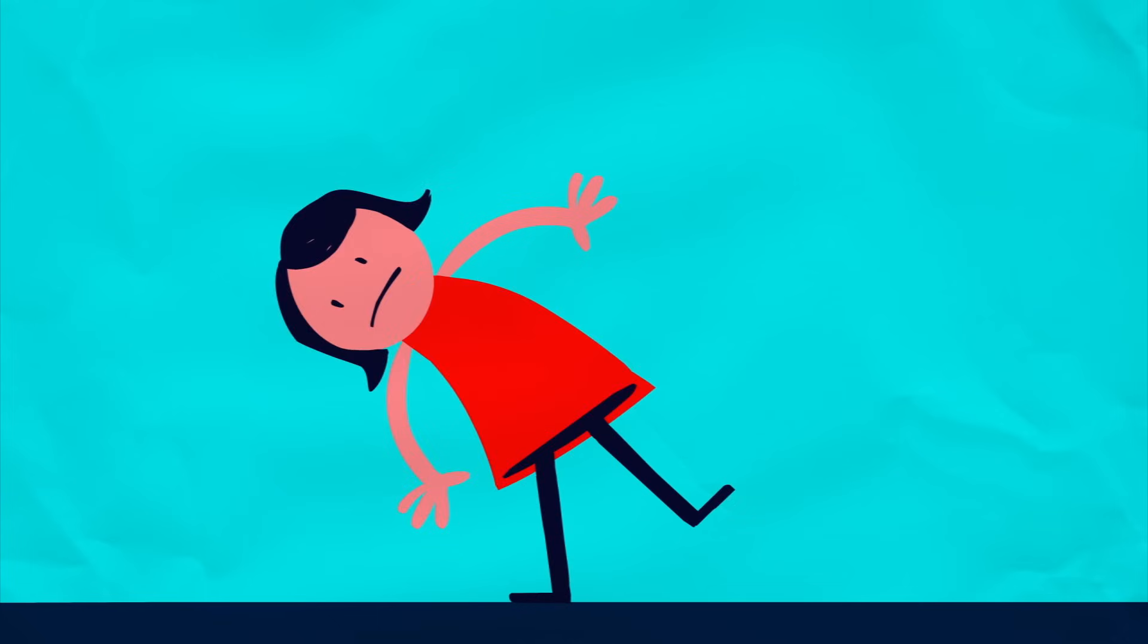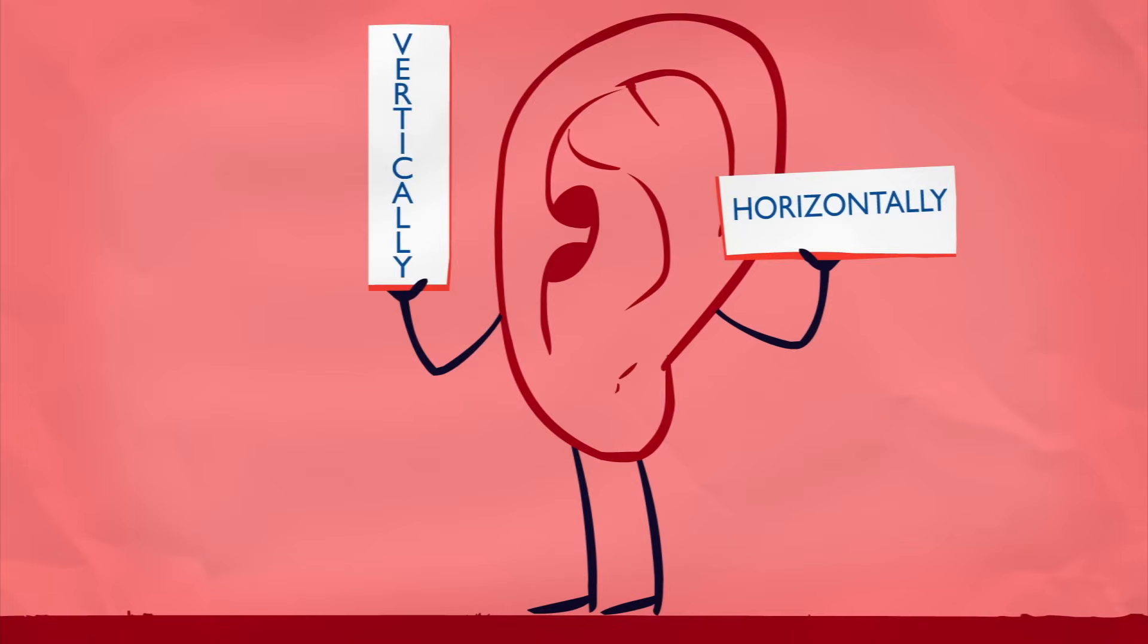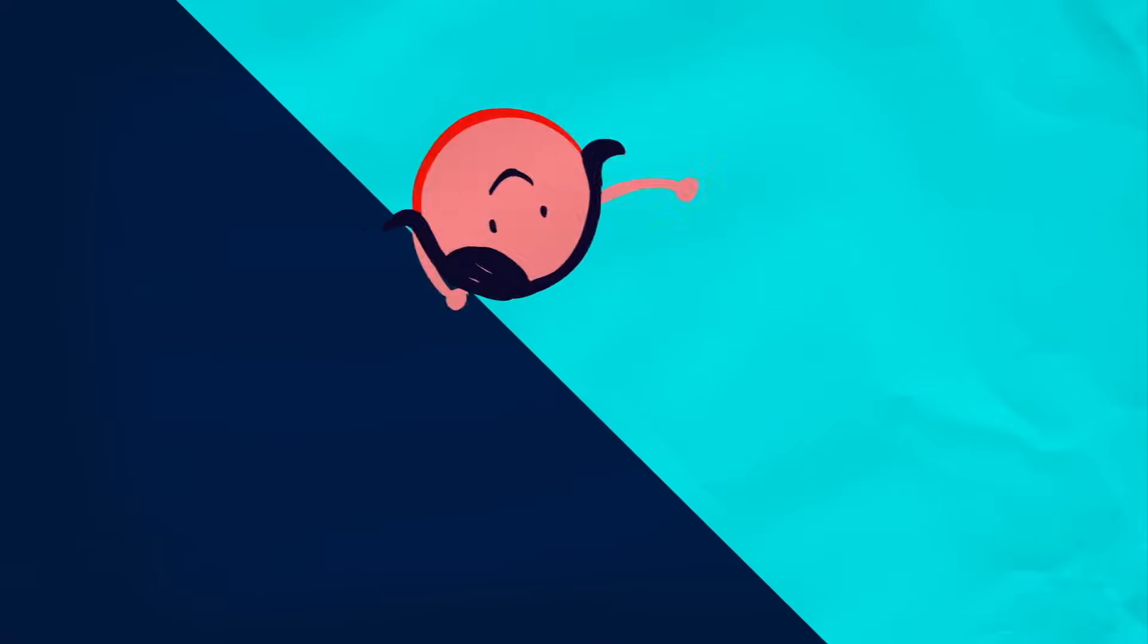And there are also two hairline sacs that are filled with fluid. So when you move, the fluid shifts and tickles the hairs, telling your brain whether you're moving horizontally or vertically. With all these combined, your body can sense which direction you're moving in, how much you've accelerated, even at what angle.